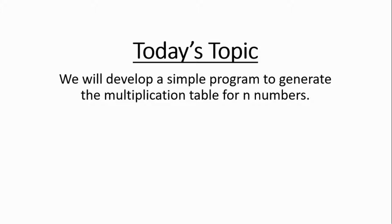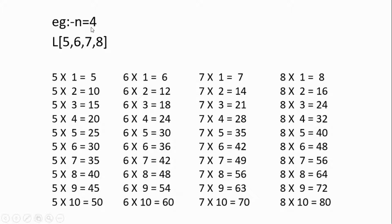Hello everyone, welcome back. Today's topic is developing a simple Python program to generate a multiplication table for N numbers. You might have come across a program to generate a table for a particular number, but what we're going to do is accept a number N — for example 4 — store 4 different numbers in a list like 5, 6, 7, and 8, and generate a multiplication table in a side-by-side format. It's a simple program that will help you clear the concepts of looping.